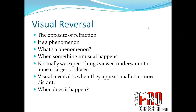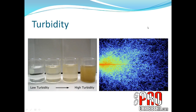Visual reversal is when objects appear smaller or more distant. When does it happen? It happens in turbid water. Turbidity is poor visibility — suspended particles in the water causing poor visibility. You can see a picture showing turbidity, and the other image illustrates what might be happening to light particles as they try to pass through turbid water. Light is being scattered and bouncing off those little suspended particles in that turbid water.